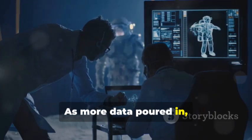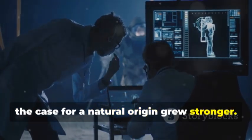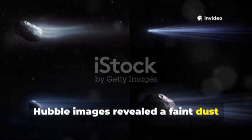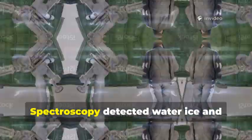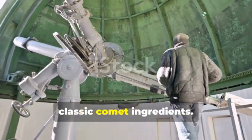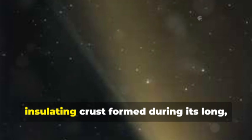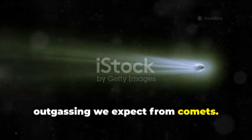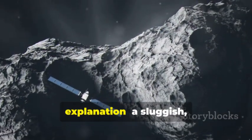As more data poured in, the case for a natural origin grew stronger. On July 21, 2025, Hubble images revealed a faint dust cocoon, a hidden tail. Spectroscopy detected water ice and carbon dioxide, classic comet ingredients. The lack of early activity was likely due to a thick, insulating crust formed during its long, cold journey. Solar heating eventually triggered the outgassing we expect from comets. Every anomaly found a plausible explanation.